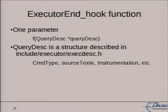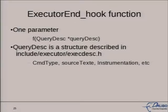On the executor_end hook function, which we'll use for the example, there is only one parameter: a structure called query desc, which allows you to get information on the command type — is it an INSERT, UPDATE, CREATE EXTENSION, et cetera — the query string, and an instrumentation structure which gives you lots of statistics gathered during the execution of the query.